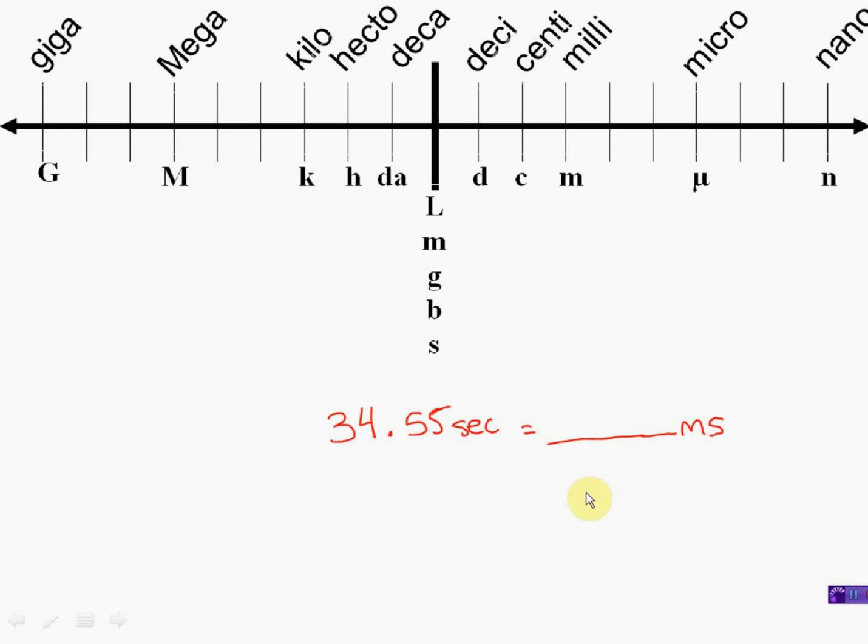All right, guys, here we go. Let's start off this time in 34.55 seconds. I want to find out how many milliseconds that's equal to. All right, so let's go here. We're in seconds. Seconds is just on the base unit. I know it's on the base unit because there's no prefix in front of it.